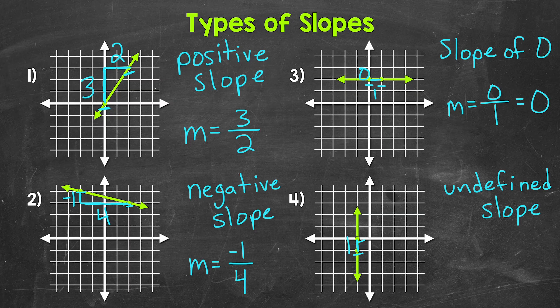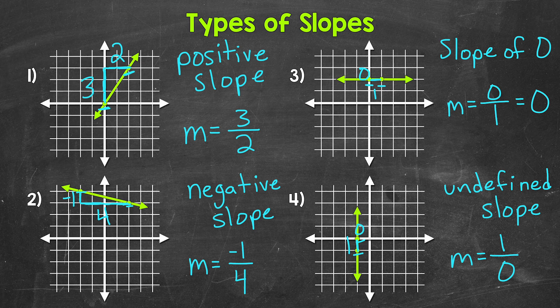Now for the run — how far over do we go? Well, we don't have horizontal change here, so our run is zero. Slope equals our rise of one over our run of zero. Whenever we have a fraction with a denominator of zero, we have something that is undefined because we are dividing by zero, and we can't divide by zero. So since the run — the denominator — is zero, this is undefined. The slope of any vertical line is undefined. Our last type of slope: undefined slope.